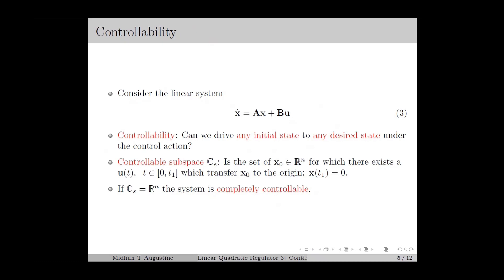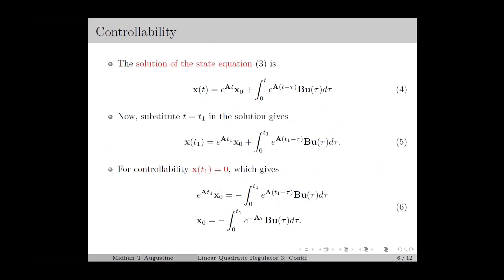Next, we discuss the basic criteria for the LTI system to ensure controllability. From basic linear system theory, the general solution of the state equation is obtained as equation number 4. If we substitute t equal to t1 in the solution, we obtain equation number 5. For controllability, we require some control input to this equation which makes x(t1) equal to 0.